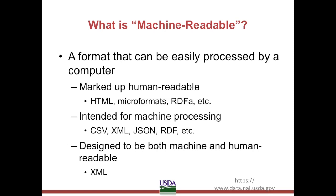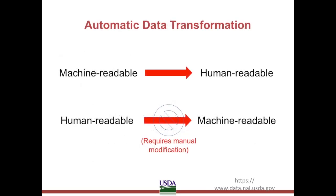However, extensible markup language, or XML, is designed to be both human and machine-readable to someone who is used to dealing with that format, and extensible stylesheet language transformation, or XSLT, is used to improve presentation of the data for human readability. For example, XSLT can be used to automatically render XML into a PDF format. A good rule of thumb is that machine-readable data can be automatically transformed for human readability, but generally speaking, the reverse is not true.